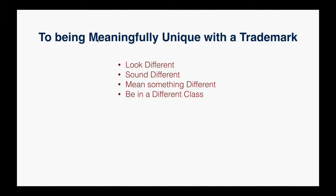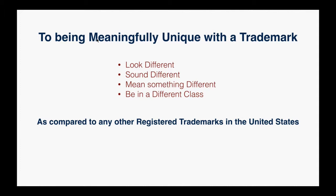Just like with patents, to be meaningfully unique with a trademark there are standards. The Patent and Trademark Office looks at whether your mark looks different, sounds different, and means something different from other trademarks, and whether it's in a different class of goods or services. They compare that to all registered trademarks in the United States. Your trademark would only be registered in the United States — you'd need to file separately for Europe, Mexico, Canada, Japan, and other regions — though filing in the US does give you precedence going into those countries.